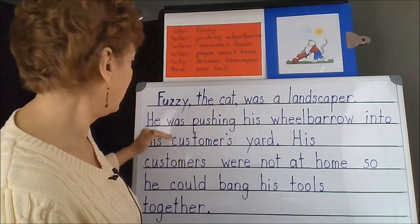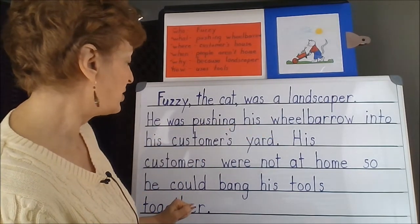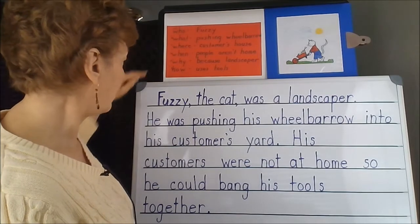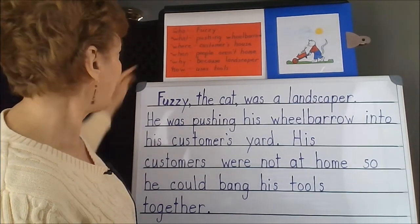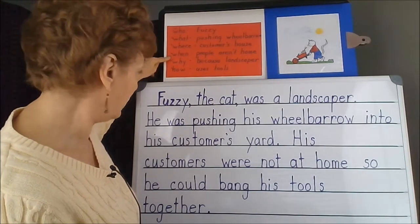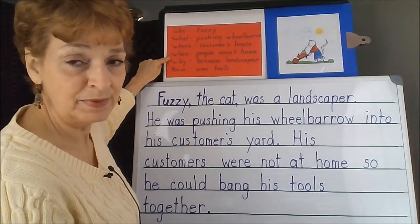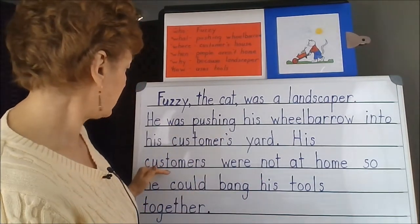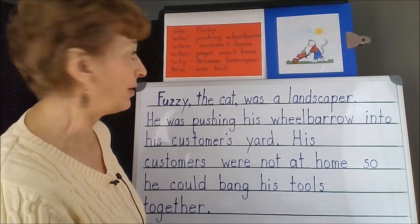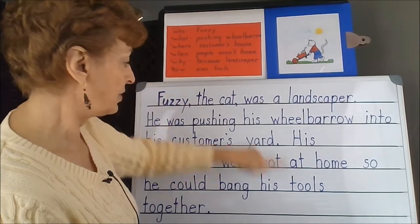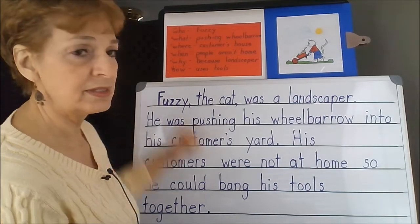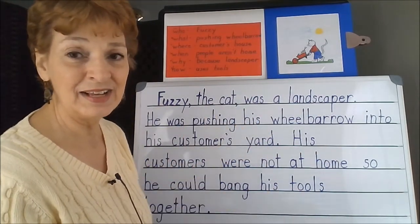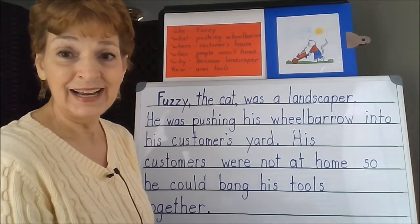Fuzzy the cat was a landscaper. He was pushing his wheelbarrow into his customer's yard. His customers were not at home — that's a 'when.' It doesn't have to be a date on the calendar or an exact time of day; generally, the customers were not home — that was the time that he went. His customers were not at home, so he could bang his tools together. Now we've used the tools to come into play. So all six of the notes your child thought about from the picture prompt are now captured in three or four sentences, forming a paragraph. It's that easy. To be continued.